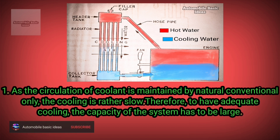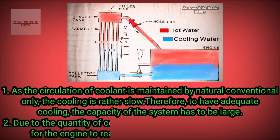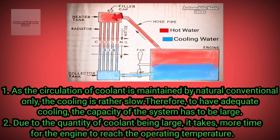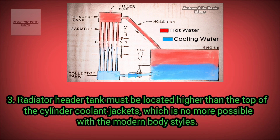However, these advantages are accompanied by many disadvantages. First, as the circulation of coolant is maintained by natural convection only, the cooling is rather slow. Therefore, to have adequate cooling, the capacity of the system has to be large. Due to the large quantity of coolant, it takes more time for the engine to reach the operating temperature.